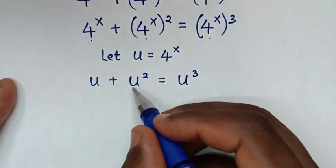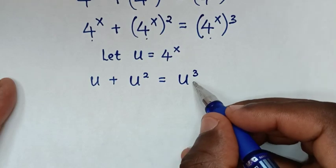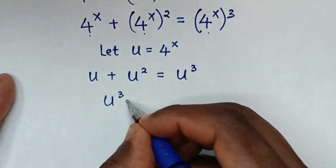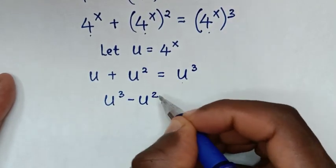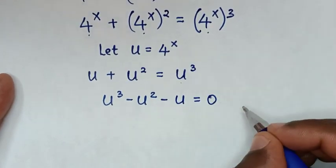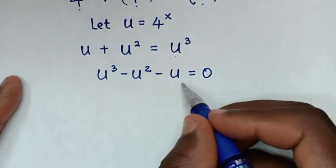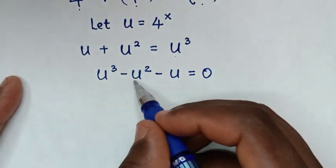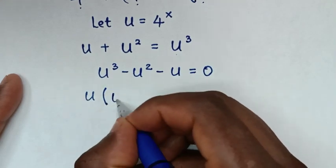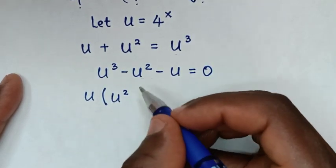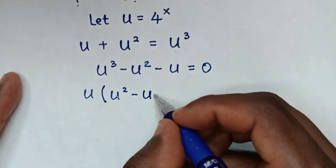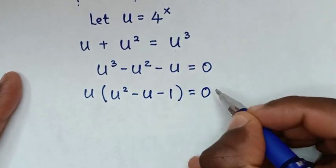Then in the next step we take u squared and u to the right side, so it will be u power of 3 minus u squared minus u is equal to 0. From the left side, u is common, so we take u out: divided by u is u squared, negative u squared divided by u is negative u, negative u divided by u is negative 1, bracket is equal to 0.